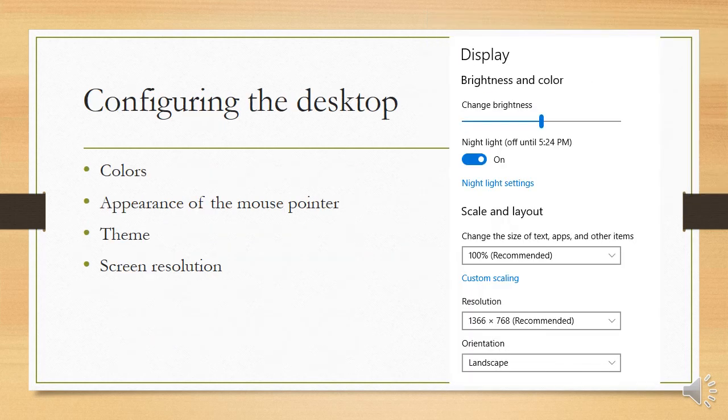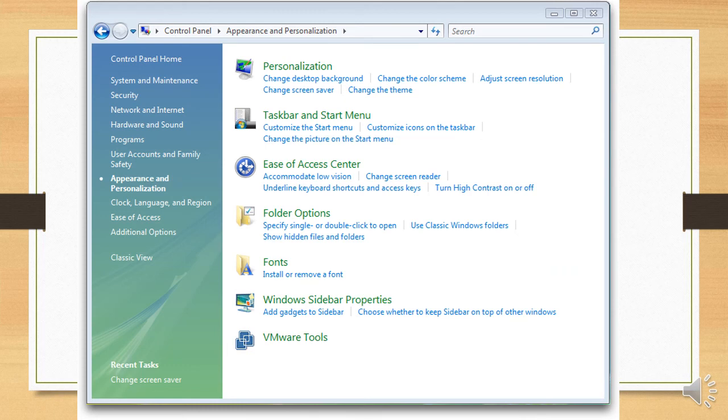To configure the desktop, you right-click on the desktop and then click on display settings. You can change the colors, the appearance of the mouse pointer, and the theme. Windows gives you different themes and also lets you change the screen resolution. Here we see this computer set to a resolution of 1366 by 768, which is the recommended resolution. All these things are a matter of personal preference. The control panel shows everything available to personalize your computer.